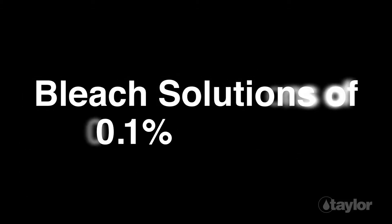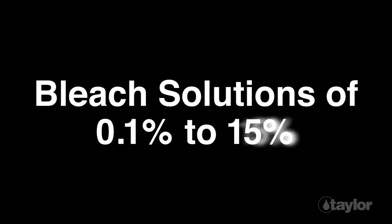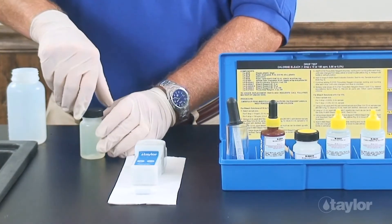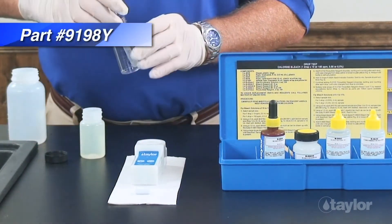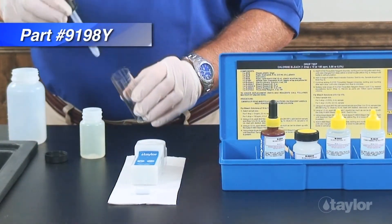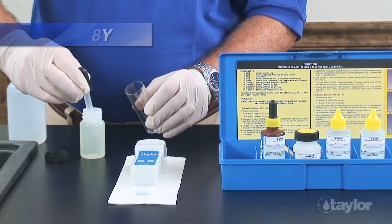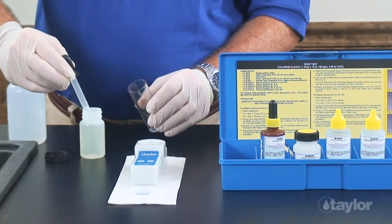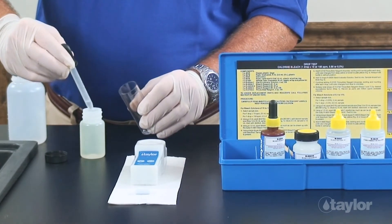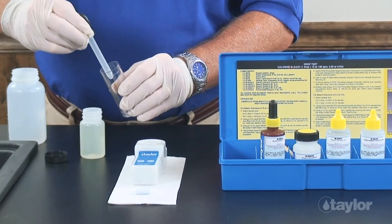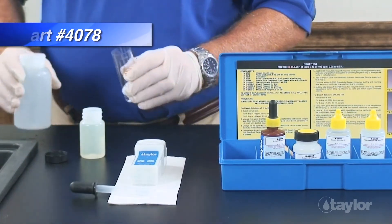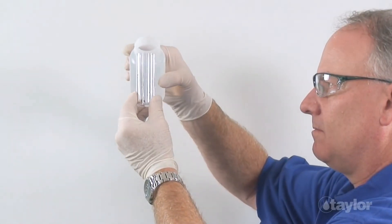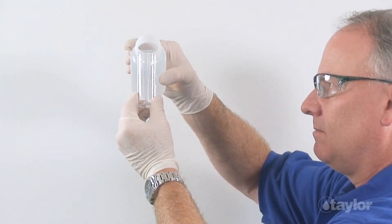Today we'll be demonstrating the test for bleach solutions of 0.1 to 15 percent. Select the sample size you prefer — either 0.5 milliliters or 5 milliliters. We'll be using a 0.5 milliliter sample. Add the 0.5 milliliter sample to be tested to the sample tube using the 3 milliliter pipette, then dilute to the 10 milliliter mark with distilled, deionized, or tap water.